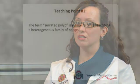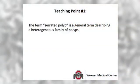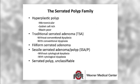To start, would you review a few basic nomenclature points? Certainly. The serrated nomenclature is complicated, but it is worth being aware of a few key points. First, the term serrated polyp does not refer to any particular polyp — it is a general term describing a heterogeneous family of polyps. For example, every polyp on the slide is a serrated polyp. This family includes the hyperplastic polyp, the traditional serrated adenoma or TSA, the filiform serrated adenoma, the sessile serrated adenoma or polyp abbreviated SSA-P, and the serrated polyp, unclassifiable.